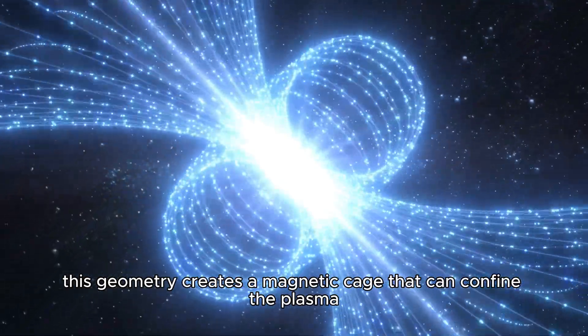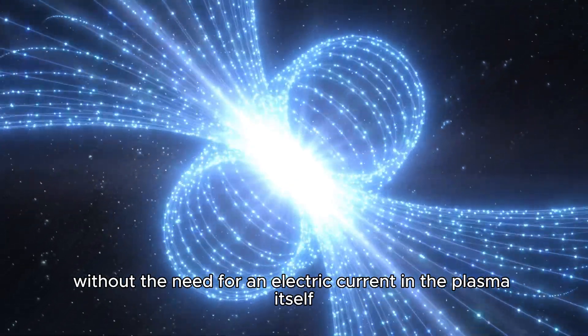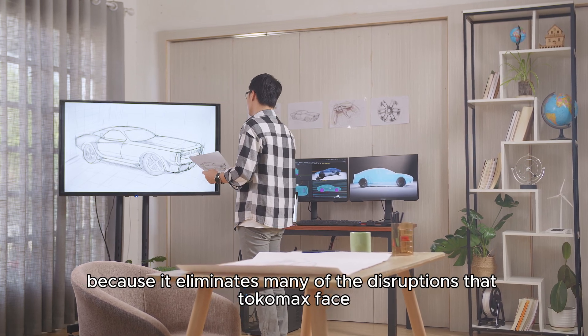This geometry creates a magnetic cage that can confine the plasma more stably without the need for an electric current in the plasma itself. This design is critical because it eliminates many of the disruptions that tokamaks face.